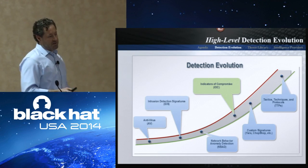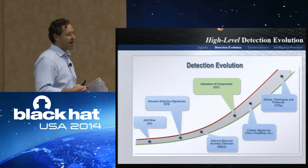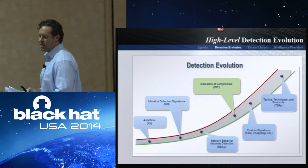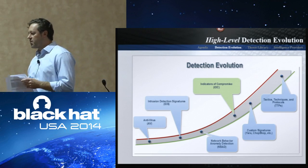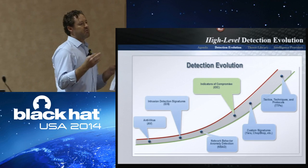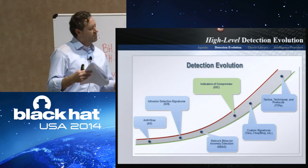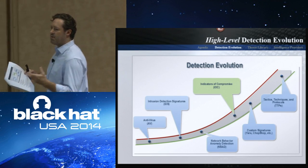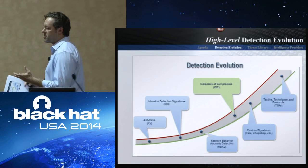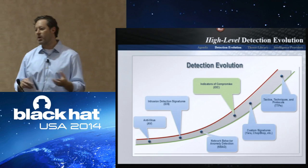Then we moved into the anomaly-based — a lot of NetFlow, a lot of statistics involved to identify anomalies. From there we moved into the indicators of compromise, the IOCs. That was again the community saying I need to share targeted attack information. The easiest way is to extract and identify the domains, the C2s, the MD5s, the IP addresses. It's very easily human consumable, and that's extremely important when you share targeted attack information.